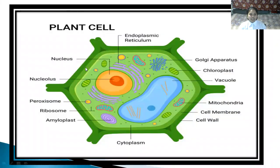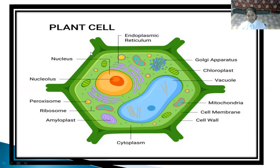If you observe here, this is a plant cell which is covered by the cell wall, which protects the plant cell from environmental factors like temperature, humidity, rainfall, etc., and the cell membrane. This calcium is used in the synthesis of the cell wall and it is used in the normal functioning of the cell membrane.